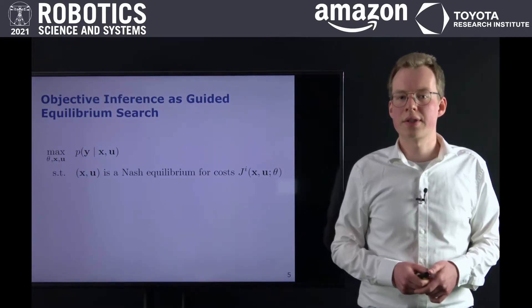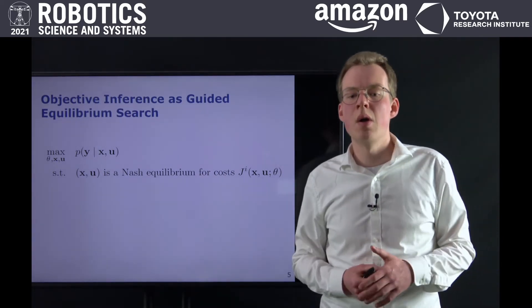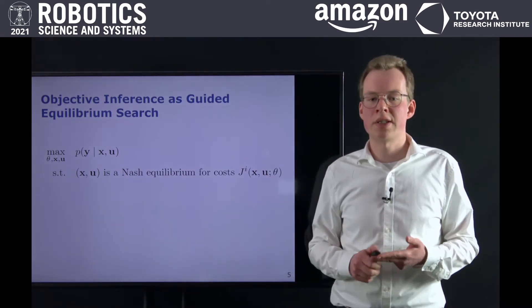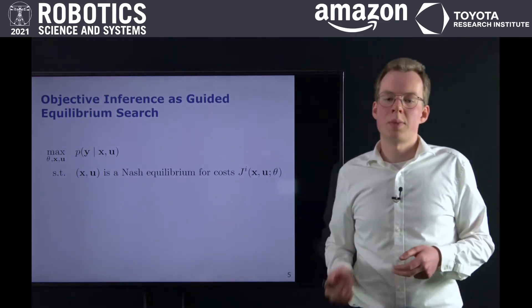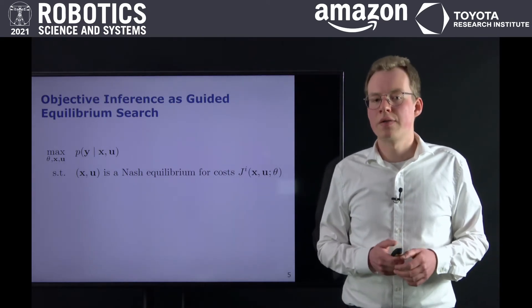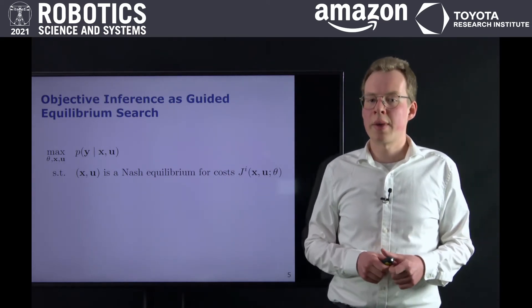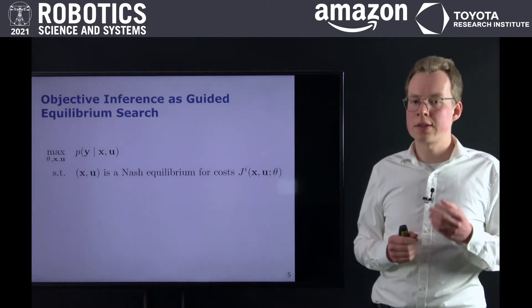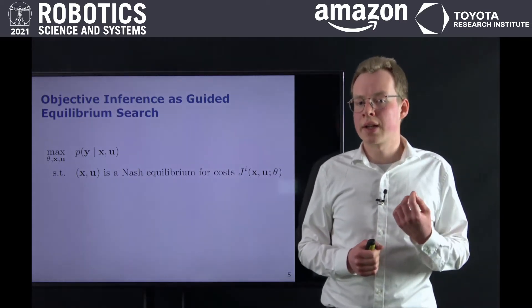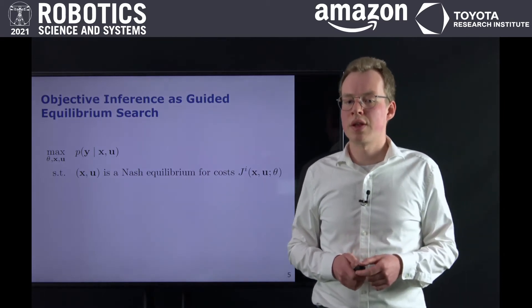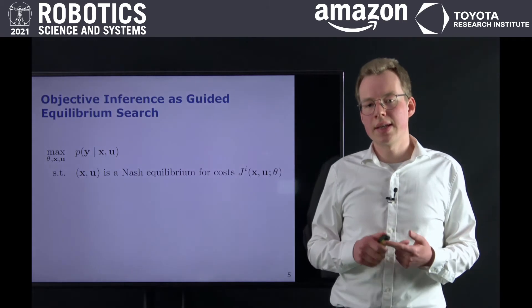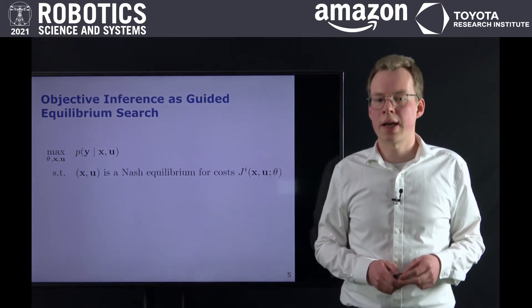We formulate the inverse game as a constrained optimization problem with decision variables for states x, inputs u, and cost parameters theta. The objective of this estimation problem is to find a state input trajectory that maximizes observation likelihood. However, we impose the constraint that this trajectory is also the solution of a game with costs parametrized by theta. As a result, this formulation estimates states, inputs, and objectives jointly in a tightly coupled fashion.